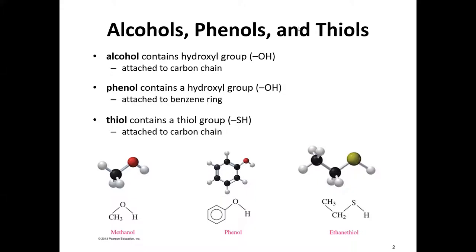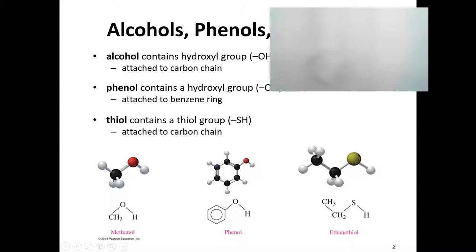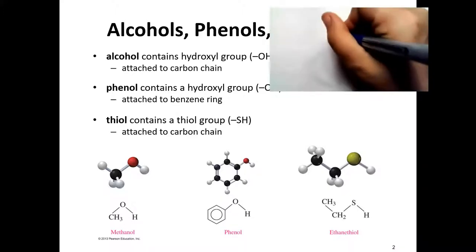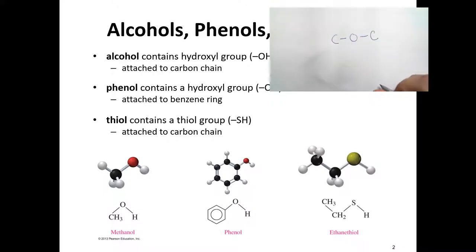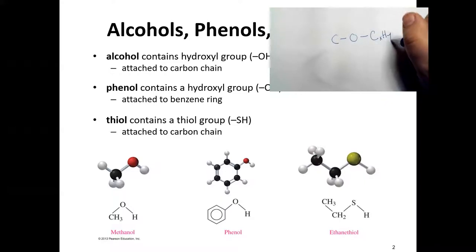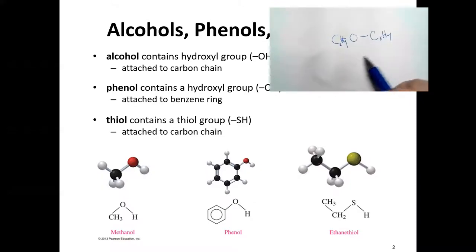The ones we're going to discuss today: alcohol is when we have an OH group attached to a carbon chain. Phenol is when we have that hydroxyl group — that same OH — attached to a benzene ring. Thiol is when we have an SH group attached to a carbon chain. An ether is when we have a C-O-C bond: a carbon bonded to an oxygen bonded to another carbon, with carbon-based groups on either side.